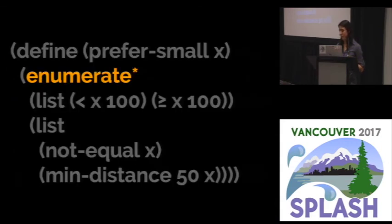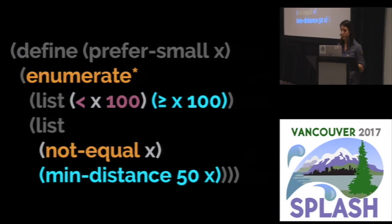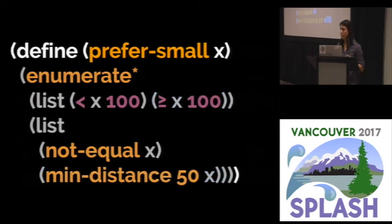And there's also a special combinator called enumerate. And enumerate gives you really fine-grained control over how you explore a space. So for example, with enumerate, you can say when x is less than 100, use the constraint not equal. So generate all the numbers less than 100. But when x is greater than or equal to 100, then generate numbers at a minimum distance of 50. And when you're generating numbers over a bounded domain, like all the numbers between 0 and 1000 with this constraint, this actually gives you a form of preferential testing, where you're preferring small numbers.